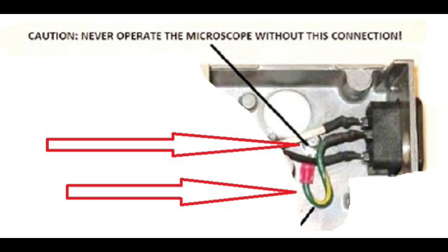Os senhores podem observar: eu tenho o fio do aterramento — o terceiro fio, ou o fio do meio da tomada. Tenho do lado esquerdo, do lado direito, e o centro — o sistema de aterramento, que é o fio terra. Se vocês observarem na figura, o fio terra é amarelo e verde. No meio elétrico, entre os eletricistas e técnicos, eles chamam esse fio de 'Brasileirinho' — acho que é por causa da cor da bandeira do Brasil, verde e amarelo. O nome desse fio é o Brasileirinho ou o fio terra. A cor padrão pela norma regulamentadora, pelas NBRs, é o fio verde — o fio verde é o fio terra.